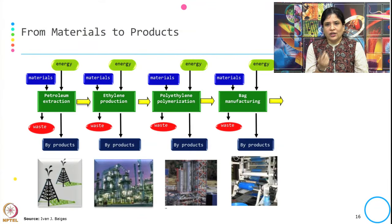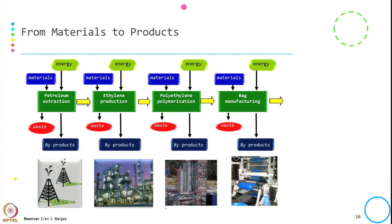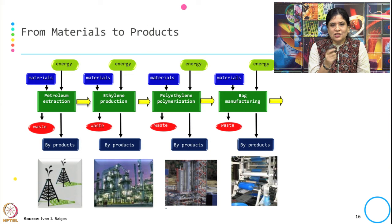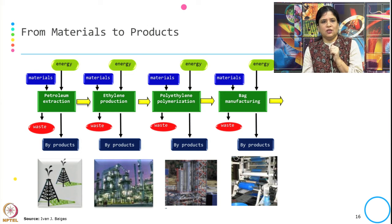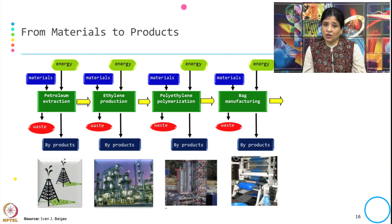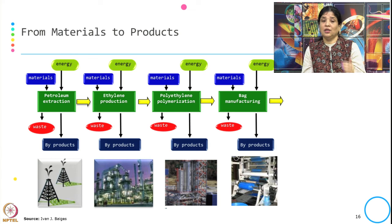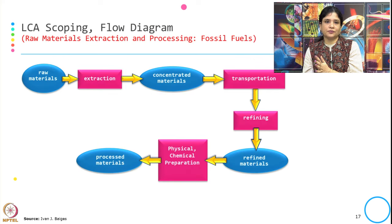A typical example from materials to product: starting from petroleum extraction through to bag manufacturing. In each stage, three things are checked — what are the inputs (energy and materials), what is the byproduct, and what waste is coming out. From petroleum extraction to bag manufacturing, in each step there are some inputs, some waste generated, and some byproducts.